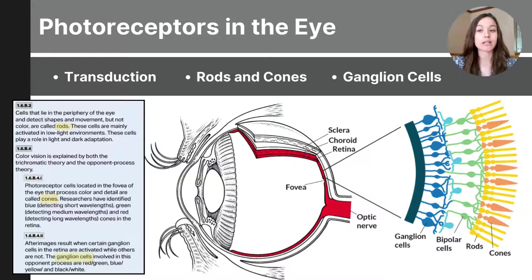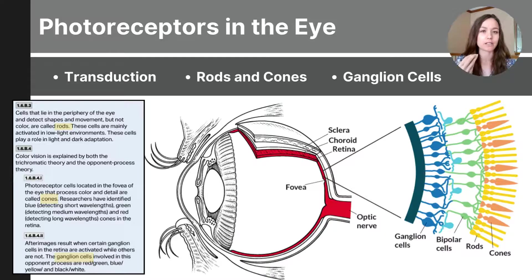Cones are concentrated in the fovea — the very center of the retina where light is directly focused. Cones detect color and fine detail.